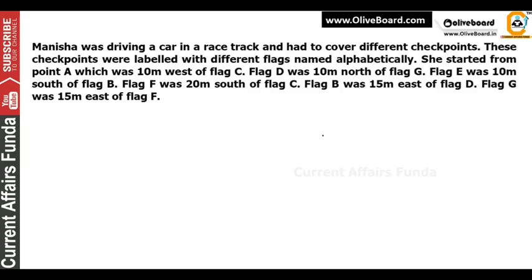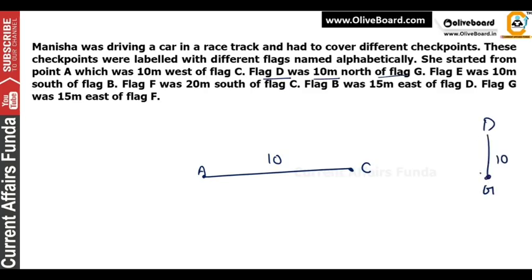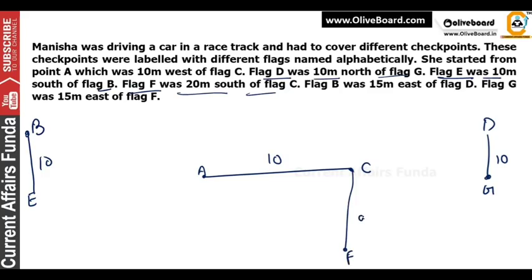Here is the directions question. Manisha was driving a car on a race track and had to cover different checkpoints, labeled with different flags named alphabetically. She started from point A which was 10 meters west of flag C. Flag B was 10 meters north of flag G. E was 10 meters south of B. Flag F was 20 meters south of flag C.